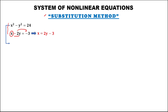Then, from the second equation, we need to substitute x with the expression we found. Since x equals 2y minus 3, we replace x with 2y minus 3 in that equation.